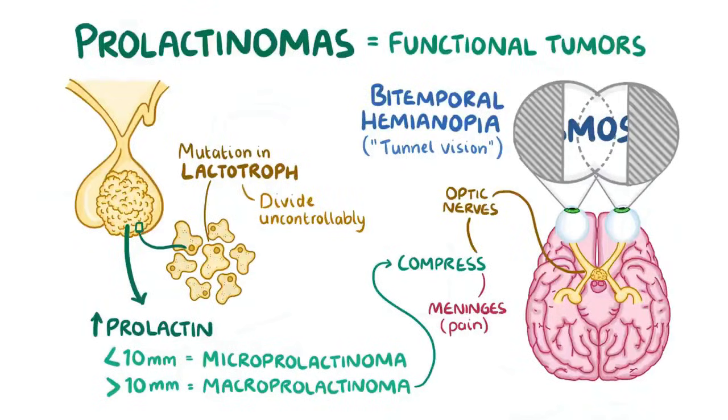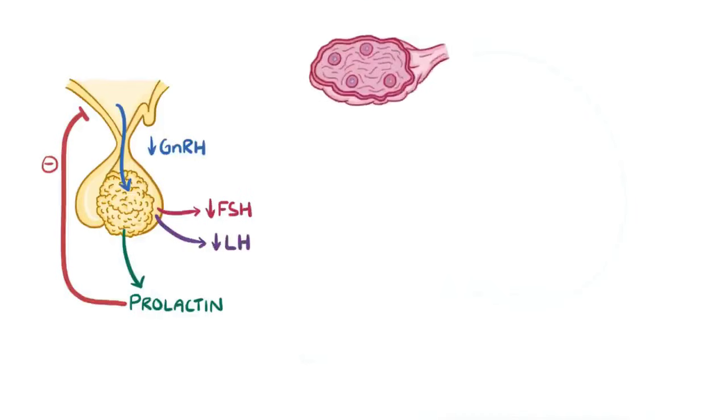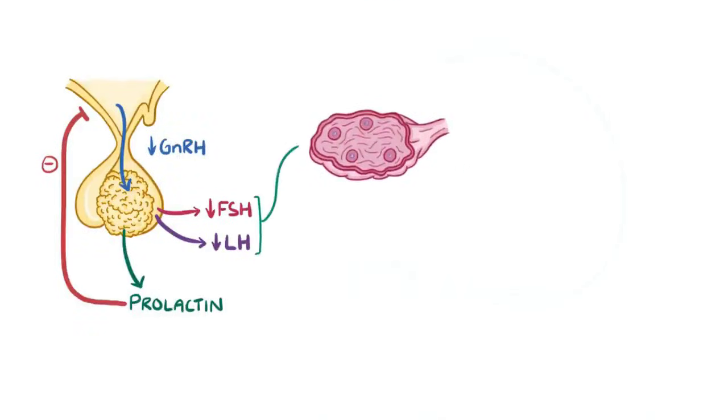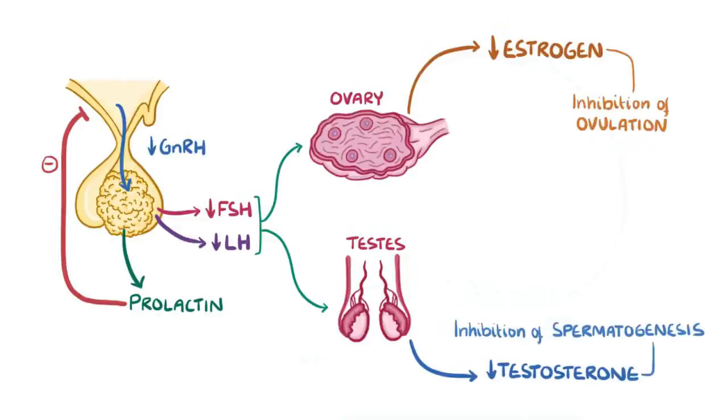As well as all the local effects, the prolactin that gets secreted by the pituitary inhibits the hypothalamus from releasing gonadotropin-releasing hormone, which leads to a decrease in follicle-stimulating hormone and luteinizing hormone from the pituitary. Now this is an issue, because it results in less estrogen being produced in the ovaries, and less testosterone in the testes. Low levels of these sex hormones can cause inhibition of ovulation in women, and inhibition of spermatogenesis in men.